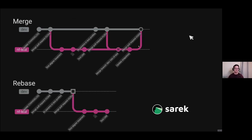In comparison: we have merge on top and rebase on bottom. The merge history is pretty difficult to follow at times — you can't really tell where the changes are coming in from. Whereas with rebase, you can clearly see what each commit is trying to do. It's much easier to review on a PR and follow someone's thought process.